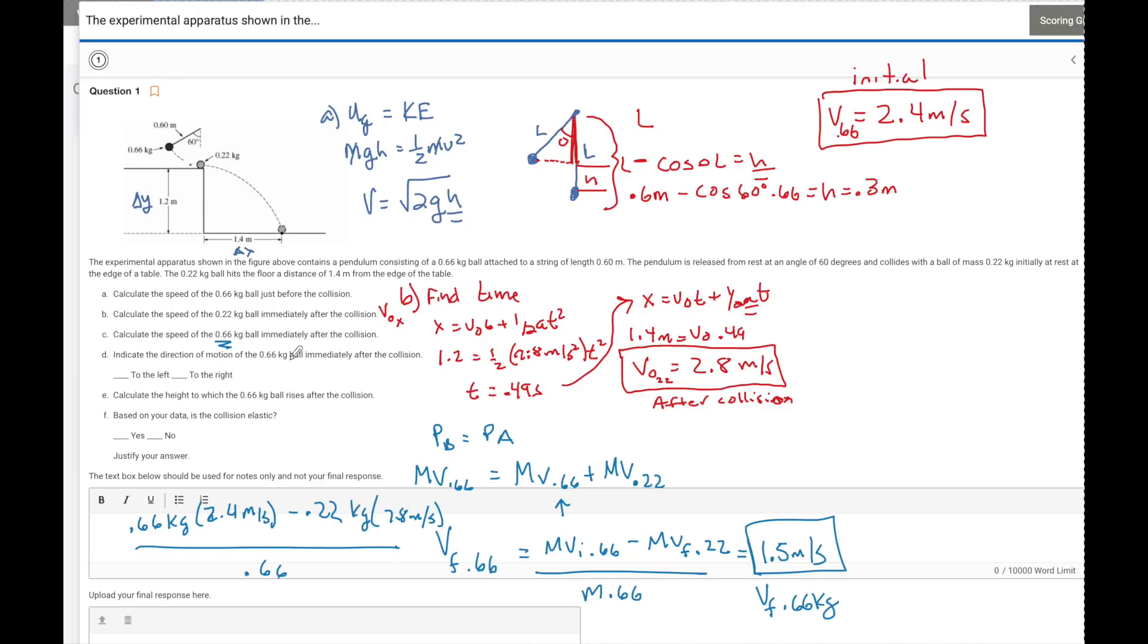So this is the v final of the 0.66 kilogram block. Indicate the direction of motion on the 0.66 ball. The direction is going to be to the right. We found that this initial speed was positive. So I call positive to the right. So this answer, because it came out positive, it is also to the right.